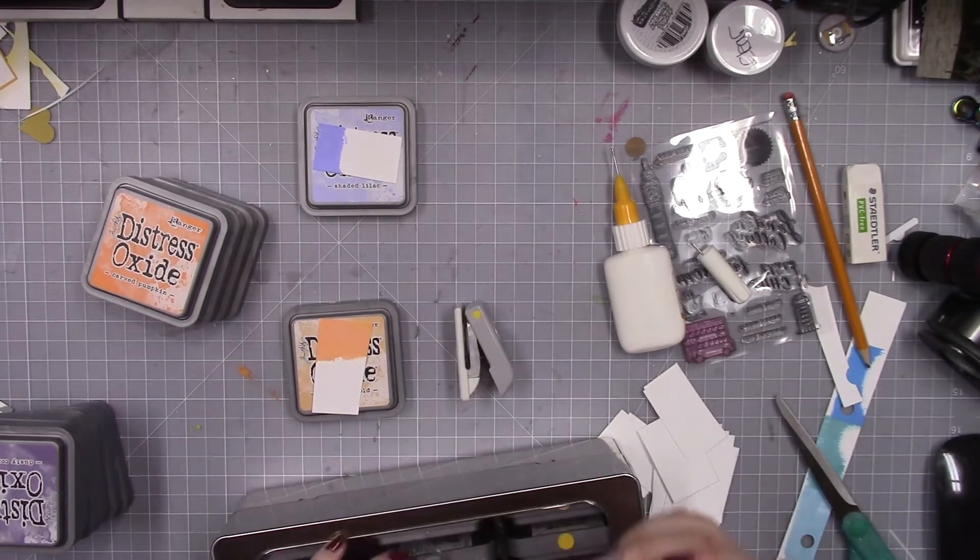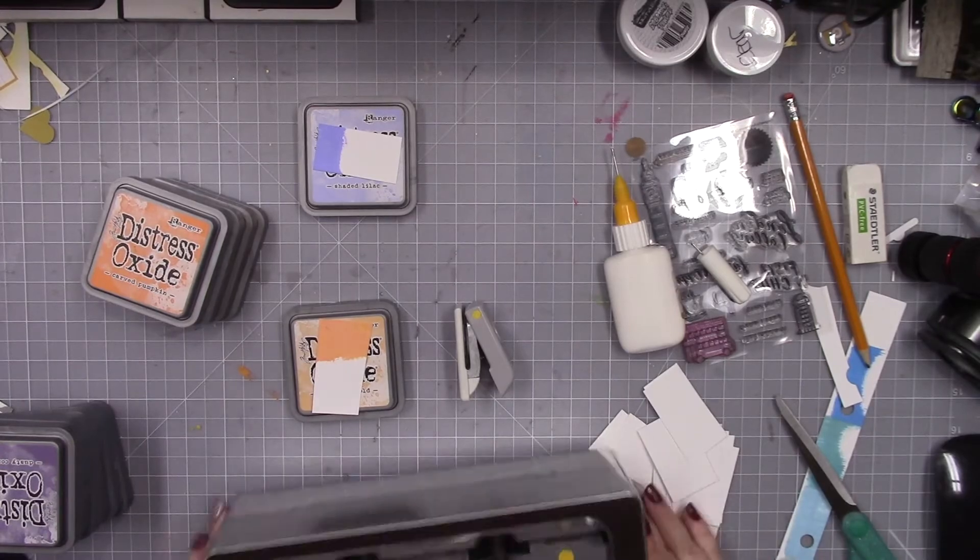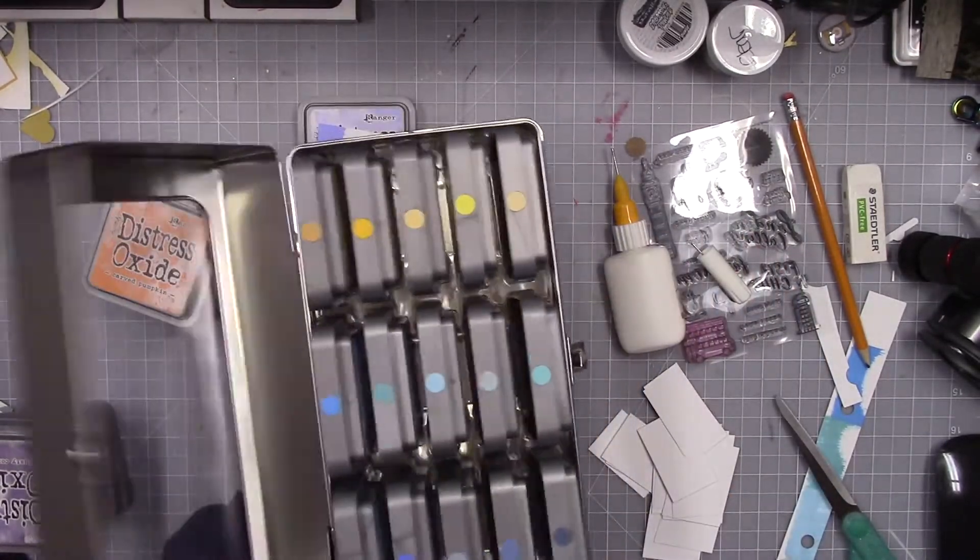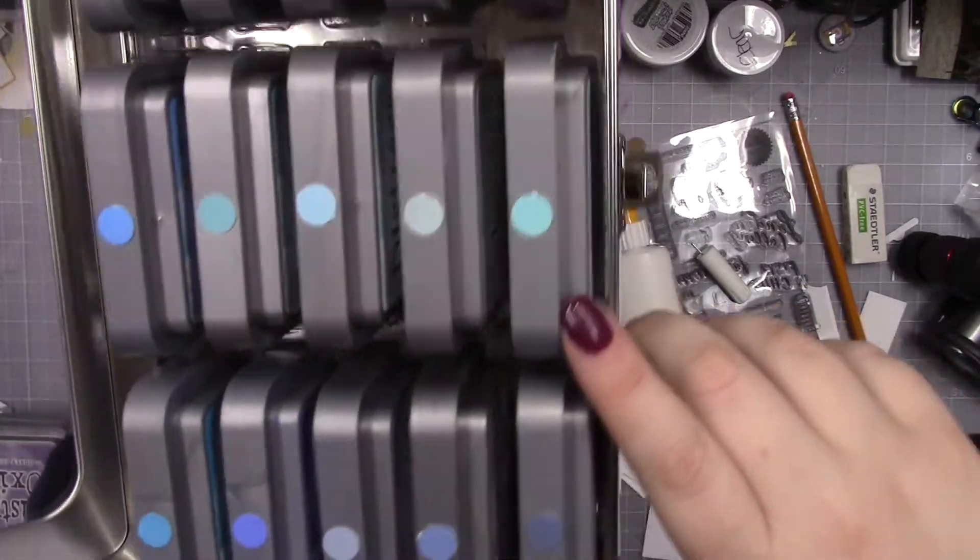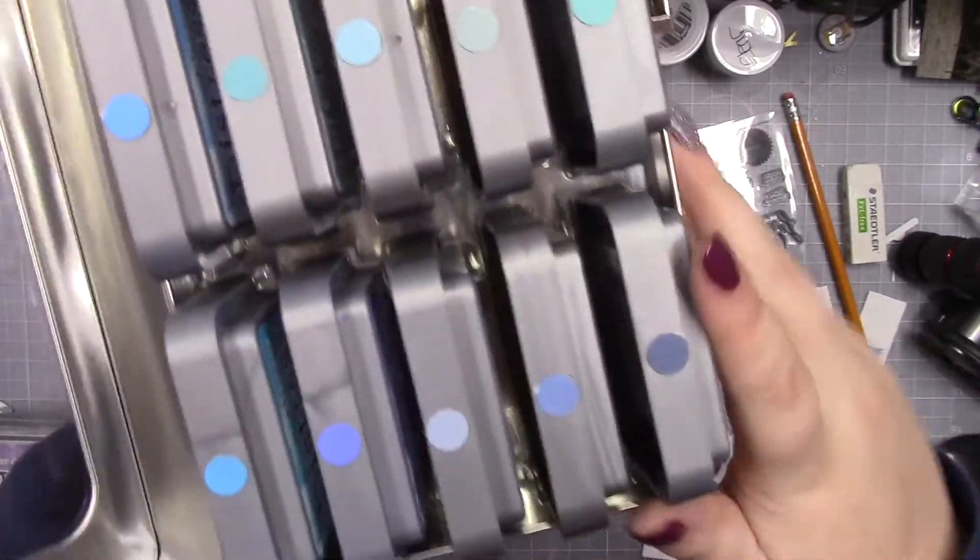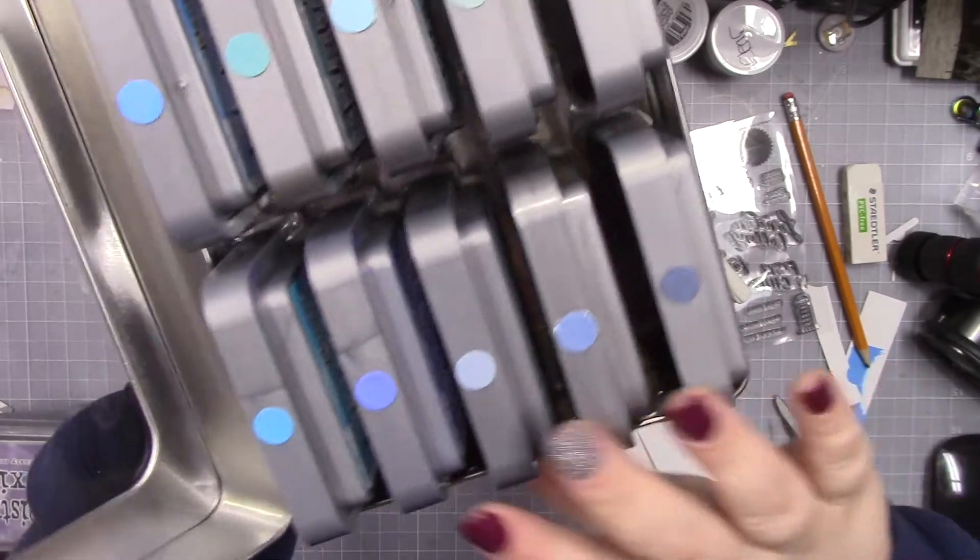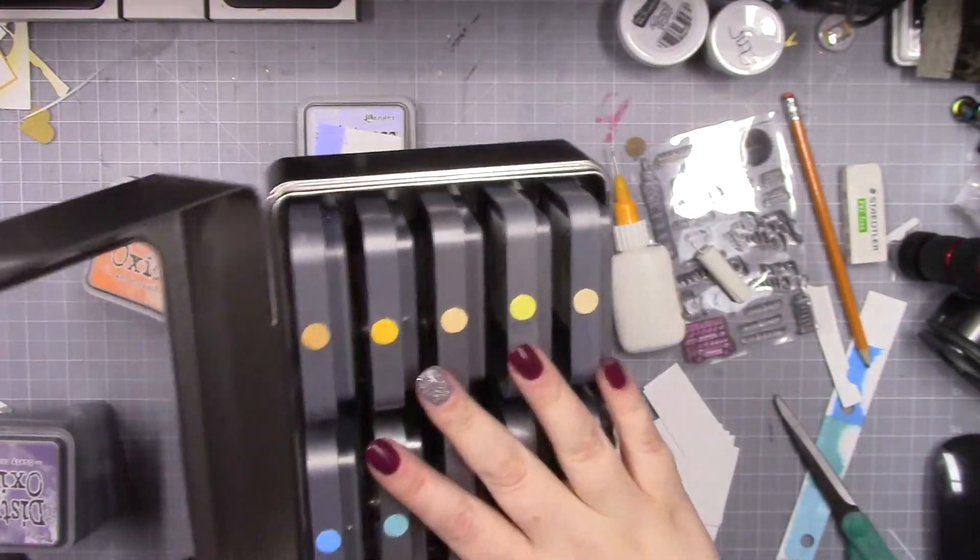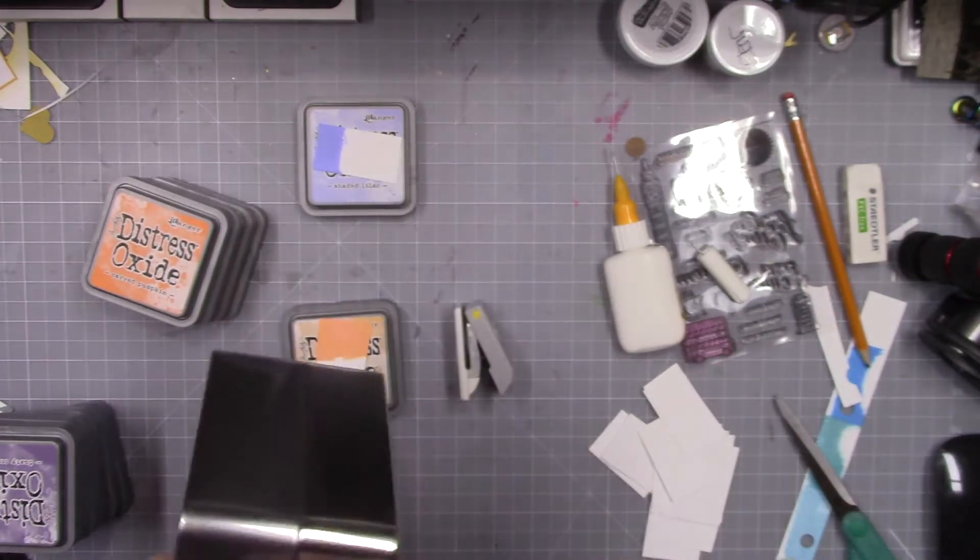That's how I'm organizing all my oxide inks with color swatches on them. The colors are not showing up well with my fluorescent lighting, but they are all there. Thanks for watching!